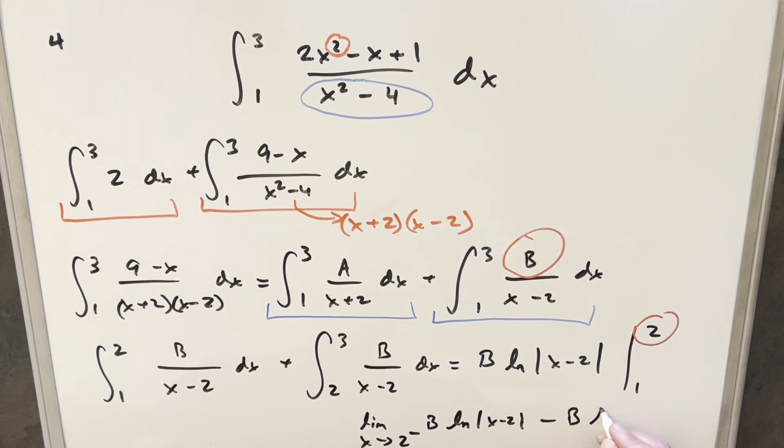So this is going to be B natural log and plugging in one minus two is going to be minus one, but absolute value of minus one is just one. But ln of one is zero. So this part is just going away. And we just need to deal with this limit right here.